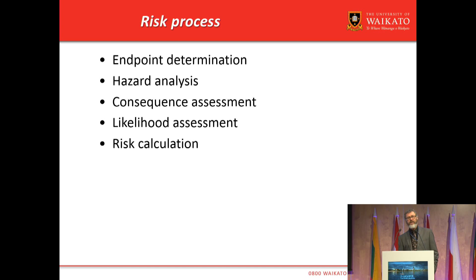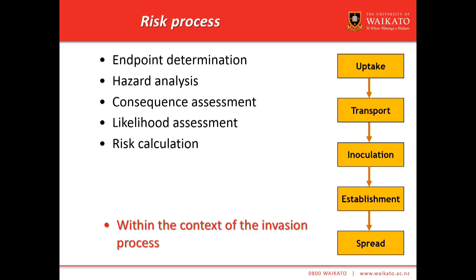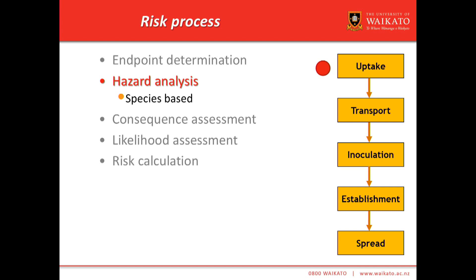Just to recap on the risk process — we're probably all familiar with various versions of this. Essentially, you identify the endpoint you wish to achieve, you identify the hazards that are likely to manifest, you look at the consequence of those hazards should they manifest, you look at the likelihood, and then you calculate risk. Hopefully, once you've communicated that risk, you are able to manage it. We do this in the context of the invasion process, which is simple in a diagram but not simple in reality. Hazard analysis is species-based — species cause harm, not the vectors or the pathways; those are merely the mechanisms by which species arrive.